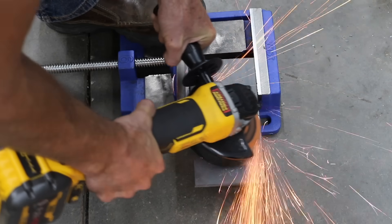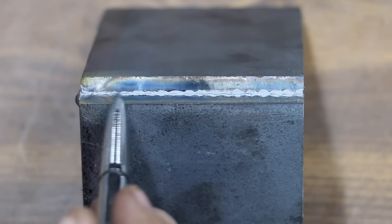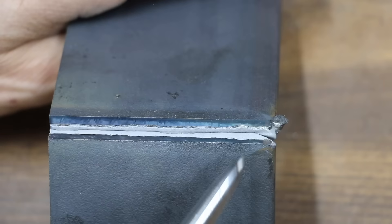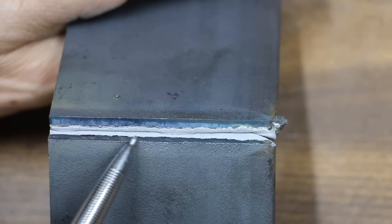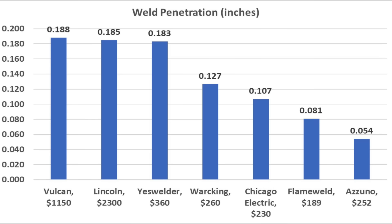I'll go ahead and grind off the weld that's just above the steel plate so we can measure penetration. I folded each of the test pieces and measured the area with the deepest penetration for each of the brands. And the Vulcan delivered the deepest weld at 0.188 inches, but the Lincoln was in a close second at 0.185. The Yes Welder also performed very well at 0.183 inches.